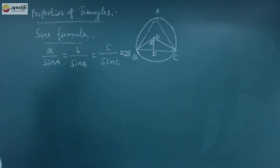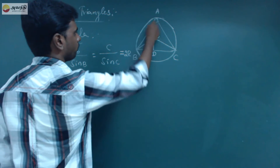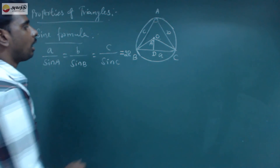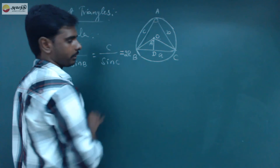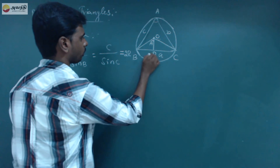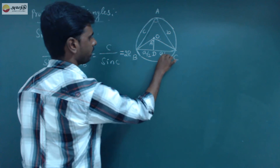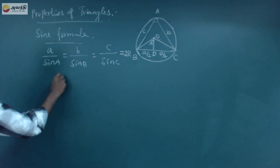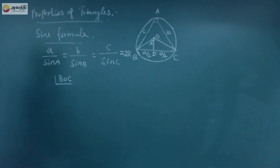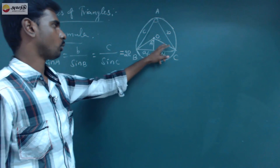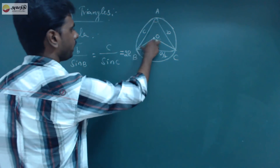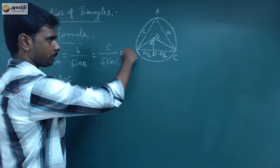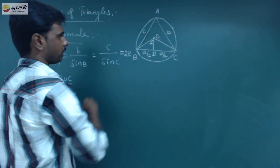The angle BOC has total value A. That means angle BOD and angle COD each equal A/2, so the side a/2 is also the midpoint BD. The triangle BOC is an isosceles triangle because OB is radius and OC is radius — both equal R. So triangle BOC is isosceles.